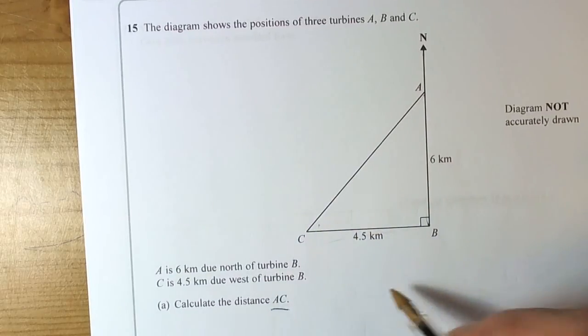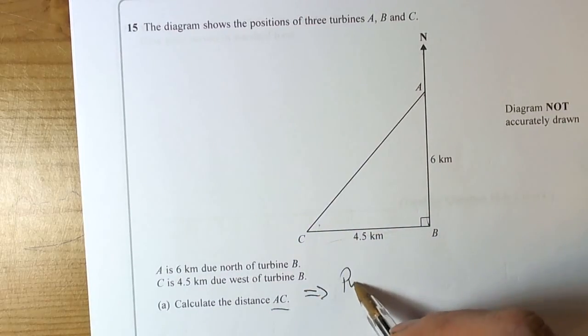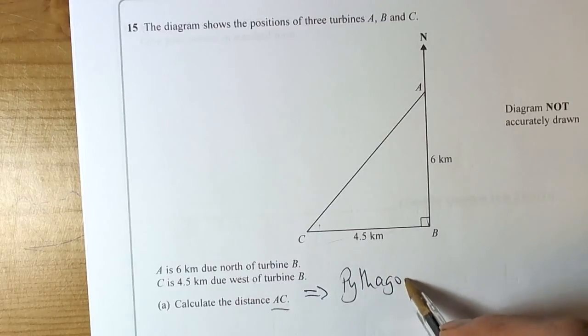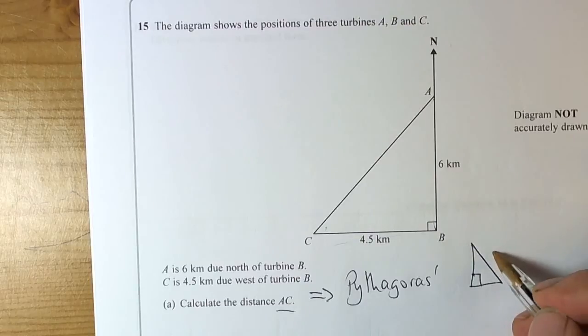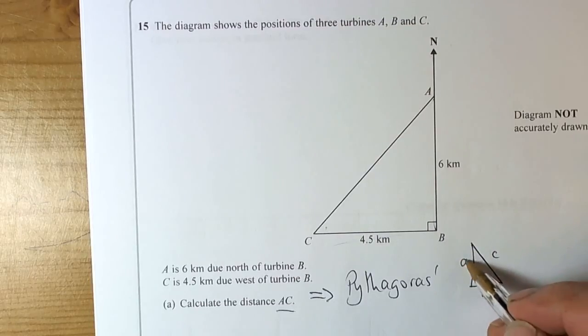We are given two lengths, so that kind of cries out to use Pythagoras' Theorem. We should really draw out Pythagoras' Theorem's triangle so that we recognize where we are putting our letters.